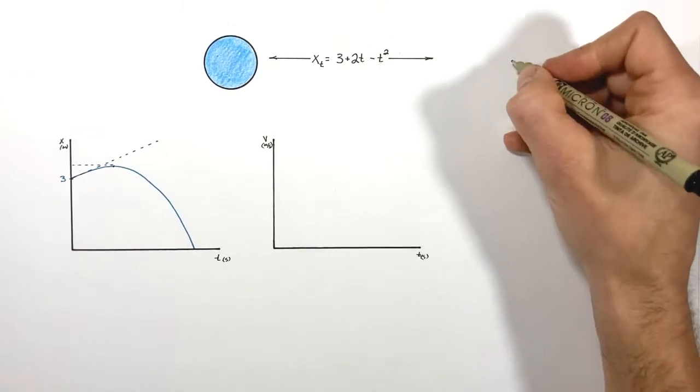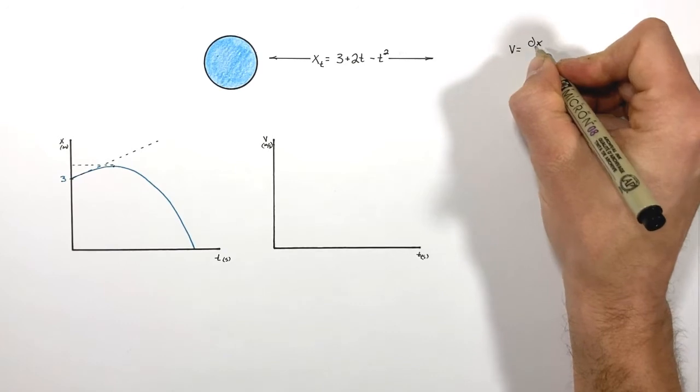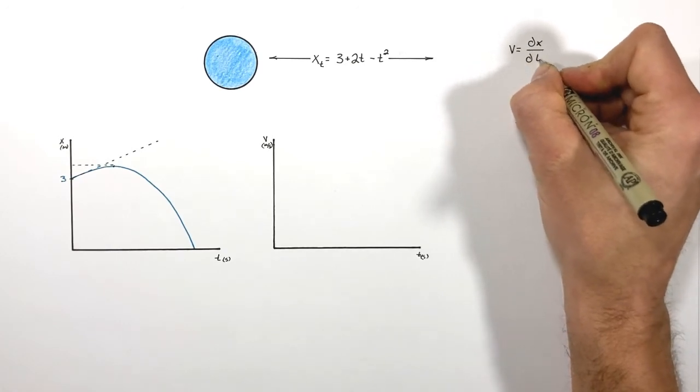So we know from physics there's a relationship between position and velocity, and that is that velocity is really just the instantaneous rate of change of position with respect to time.